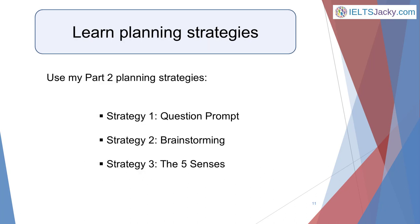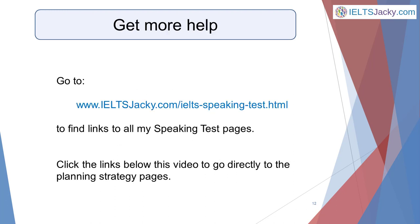Now that you have a good understanding of the format of IELTS Speaking Part 2 and what to expect on the day, you need to develop some planning strategies that you can adapt for different topics. I've done that hard work for you and created three different strategies. I've called them Question Prompt, Brainstorming, and The Five Senses. You can start using them on practice questions straight away. You'll find these three different planning strategies on my website, ieltsjackie.com, along with sample questions and answers. Just click the links below this video to go straight to the relevant pages.